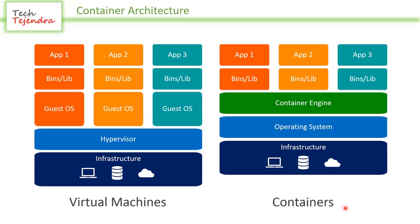Now, in containers, on top of the infrastructure we have the operating system, and then we have a container engine — something like Docker or Podman. Currently the two most famous container daemons are Docker and Podman. Inside this container engine we create containers. In this figure you can see we have created three containers, and every container has its own binaries and library files, with the application on top.